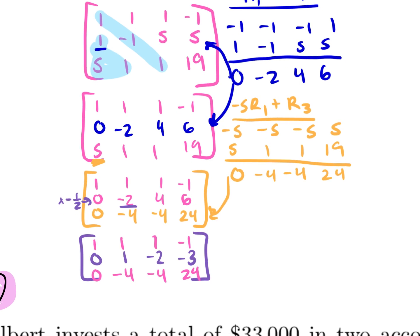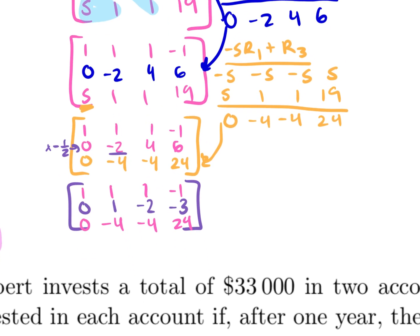Next, for the third row, multiply by one-fourth — so negative one-fourth times everything in that row. The new third row would be: zero, one, one, negative six. The first two rows stay the same.